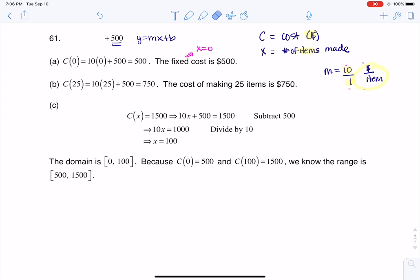So you see me going ahead, and I put in zero for x, and I substitute that, and I find a y value, or really technically a c value of 500. So that's where I'm getting that the fixed cost is 500.